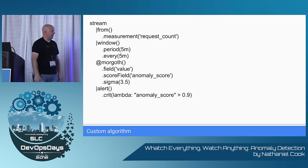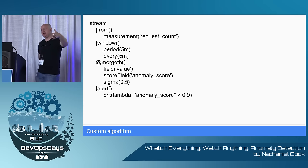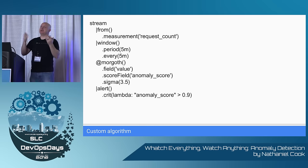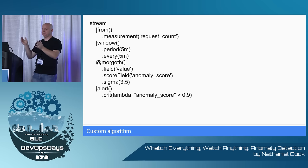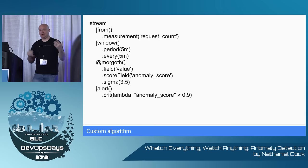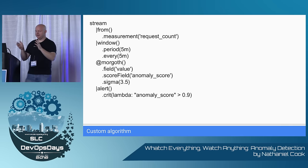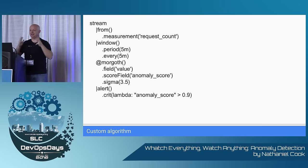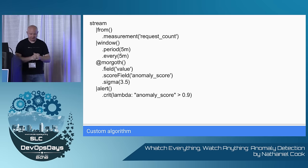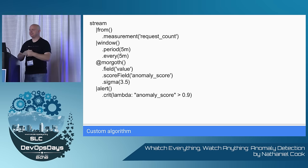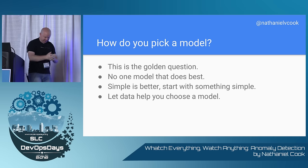Morgoth spits out a score between 0 and 1 for each window of data — closer to 1 means more likely anomalous. You can then put a static threshold on that anomaly score. Capacitor will integrate for alerting with pretty much any alerting tool you've heard of — including VictorOps, PagerDuty, Alerta, OpsGenie, and others. Being open source, Capacitor tries to integrate with all the friendly tools out there.